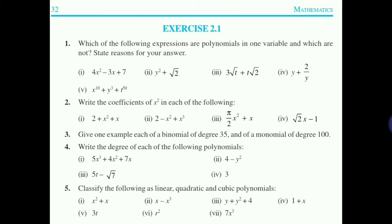Problem (e): x¹⁰ + y³ + t⁵⁰ — x, y, and t are all present, three alphabets are involved, so it is NOT a polynomial in one variable. Question 2: write the coefficient of x² in each of the following. (a) 2 + x² + x: coefficient of x² is 1 — nothing written means 1, don't put 0. (b) 2 − x² + x³: coefficient of x² is −1. (c) π/2 x² + x: coefficient of x² is π/2. (d) √2x − 1: no x² term at all, so coefficient of x² is 0.